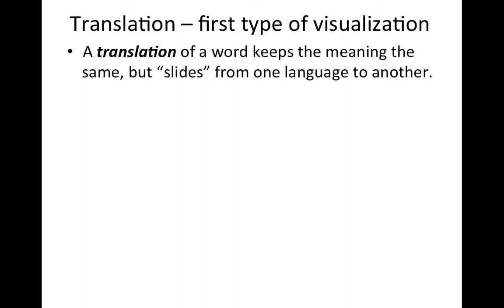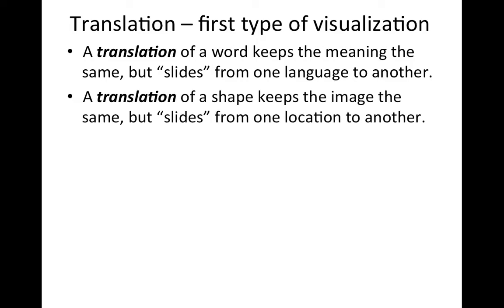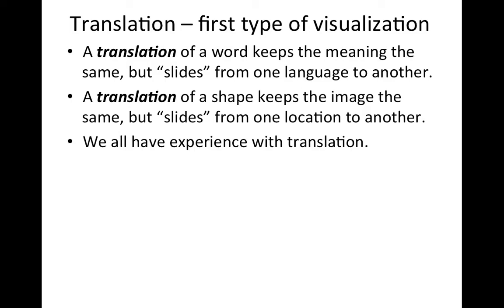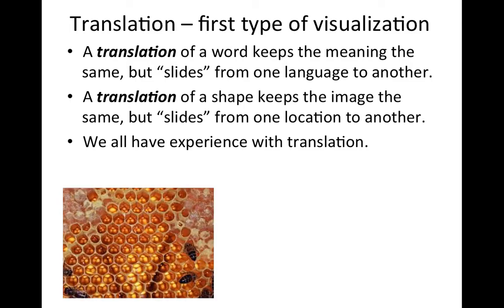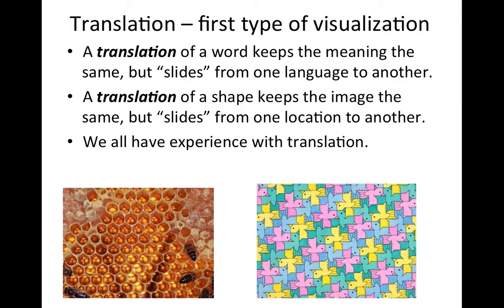Translation is the first type of transformation. Usually when we use that word we're talking about language, where a word keeps the exact same meaning but slides from one language to another when we translate it. In geometry, a translation means that the shape keeps the same image but slides from one location to another. If you've ever seen a beehive, each of the individual cells is a hexagon in the same orientation - it just slides from one location to another. Similarly, in the work of M.C. Escher using tessellation, every one of those pink birds is the exact same shape in the exact same orientation, just moved from one location to another.